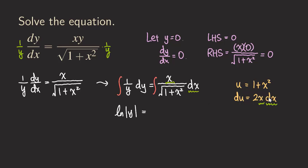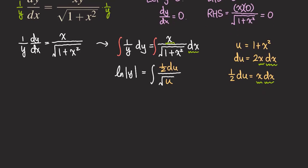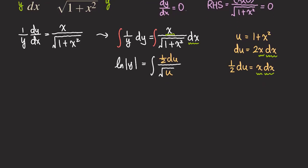We can isolate x dx and get the 2 on the other side, so 1 over 2 du equals x dx. Replacing x dx with 1 half du, we get the integral of 1 over 2 times 1 over the square root of u du. We can rewrite this integral by pulling out the 1 over 2 and writing it as the integral of u to the negative 1 over 2 du.